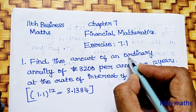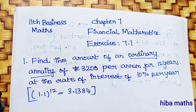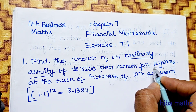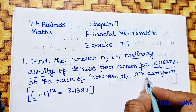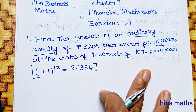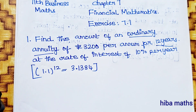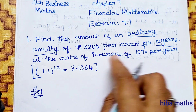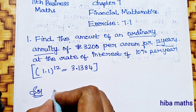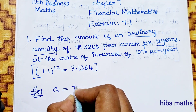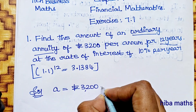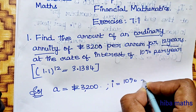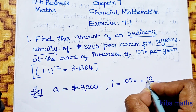First question: Find the amount of ordinary annuity of Rs.3200 per annum for 12 years at the rate of interest 10% per year. So, a equals 3200, i equals 10% per annum, and n equals 12 years.